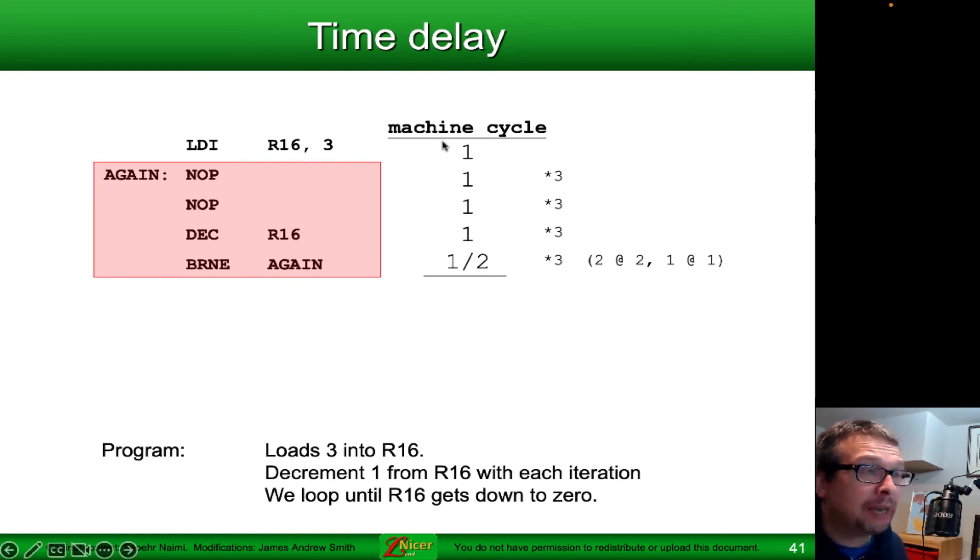In total it takes one plus three, that's four, plus three, that's seven, plus three, that's 10, plus four, plus one. That's 15 clock cycles. Of course, we then have to add in the load immediate at the very beginning.